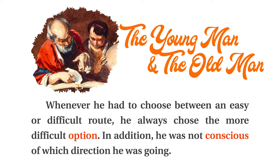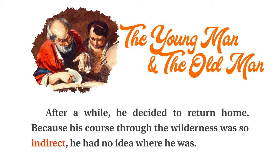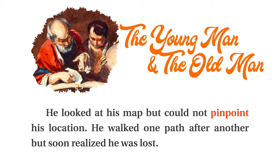In addition, he was not conscious of which direction he was going. After a while, he decided to return home. Because his course through the wilderness was so indirect, he had no idea where he was. He looked at his map, but could not pinpoint his location. He walked one path after another, but soon realized he was lost.